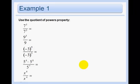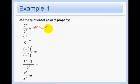Let's do some examples. Same bases so we subtract the exponents: 7 to the 5 minus 3, which is 7 squared, which is just 49.